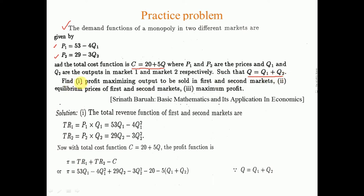We need to find the profit-maximizing output in the first and second markets, the equilibrium prices, and the maximum profit. From the demand functions p1 and p2, we calculate total revenue by multiplying output by the demand function. We obtain TR1 = 53q1 − 4q1² and TR2 = 29q2 − 3q2².